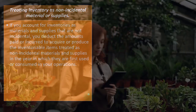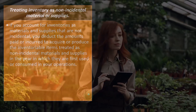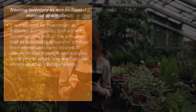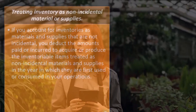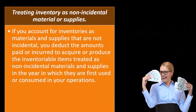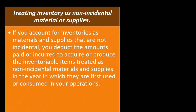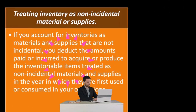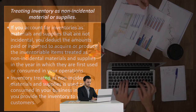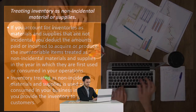Treating inventory as non-incidental material or supplies. If you account for inventories as materials and supplies that are not incidental, you deduct the amounts paid or incurred to acquire or produce the inventoryable items treated as non-incidental materials and supplies in the year in which they are first used or consumed in your operations. Inventory treated as non-incidental materials and supplies is used or consumed in your business in the year you provide the inventory to your customers.